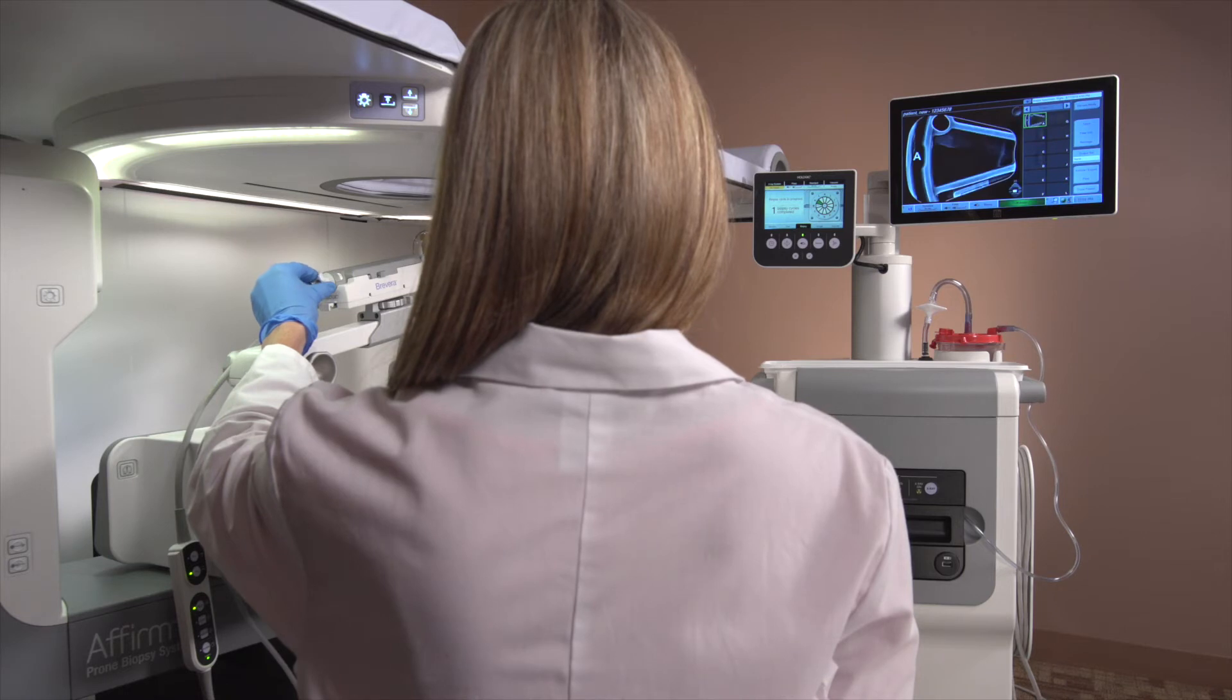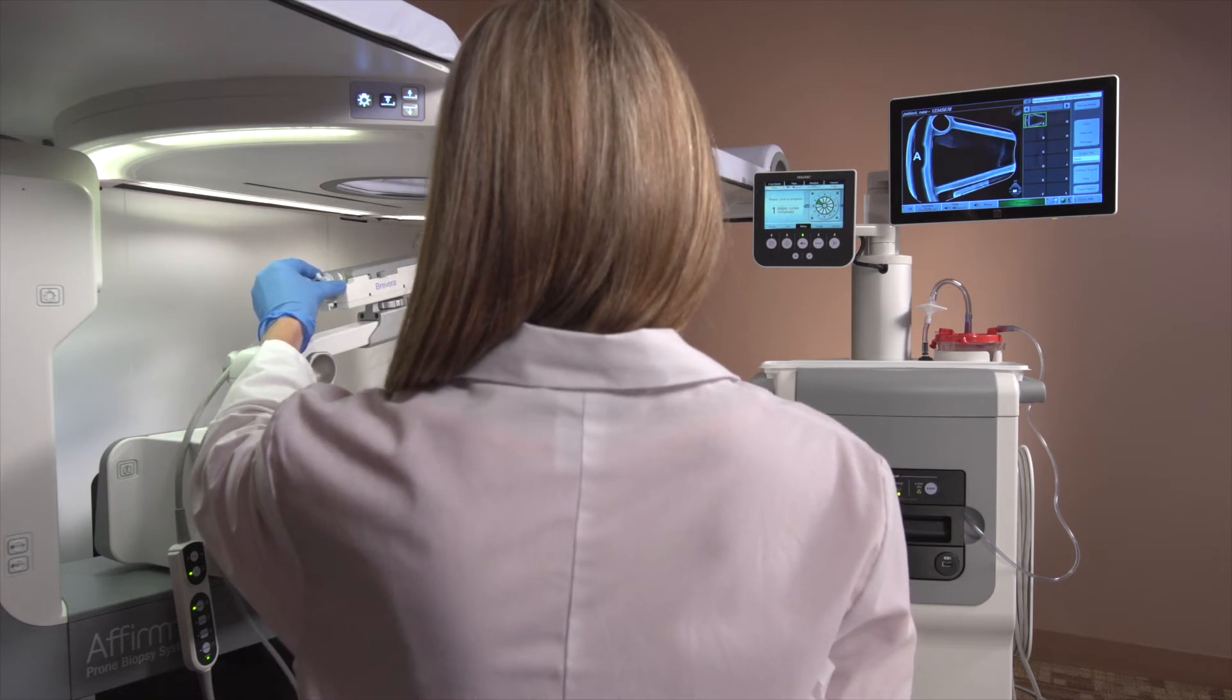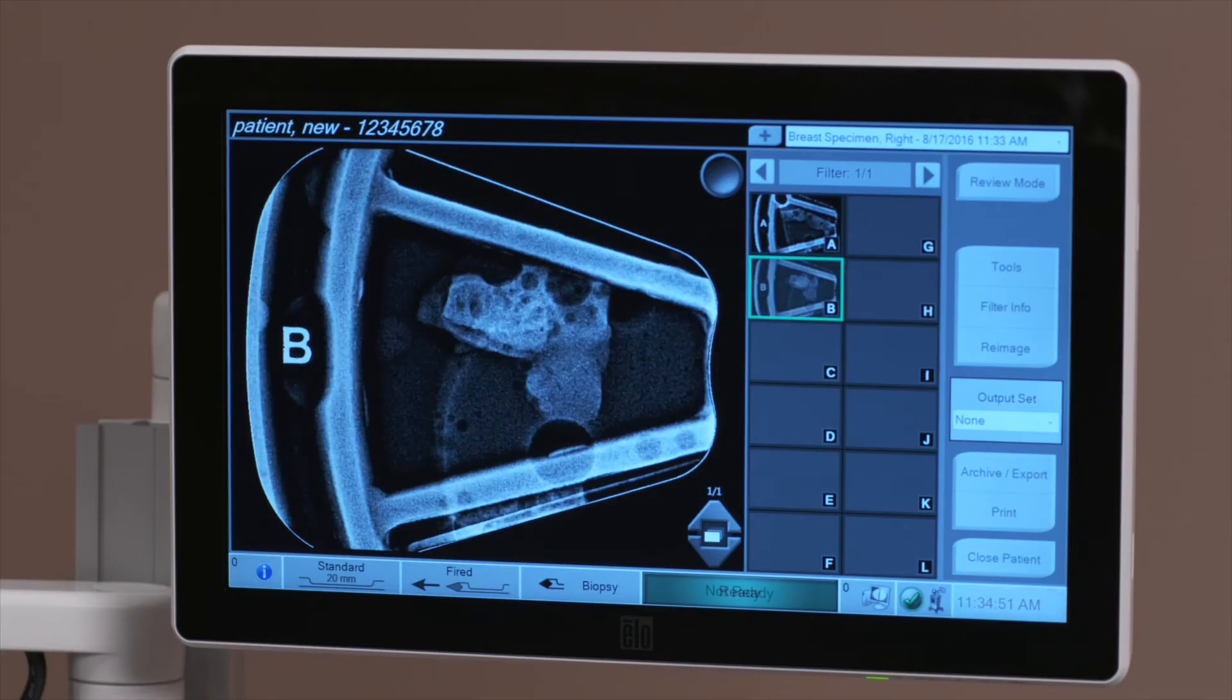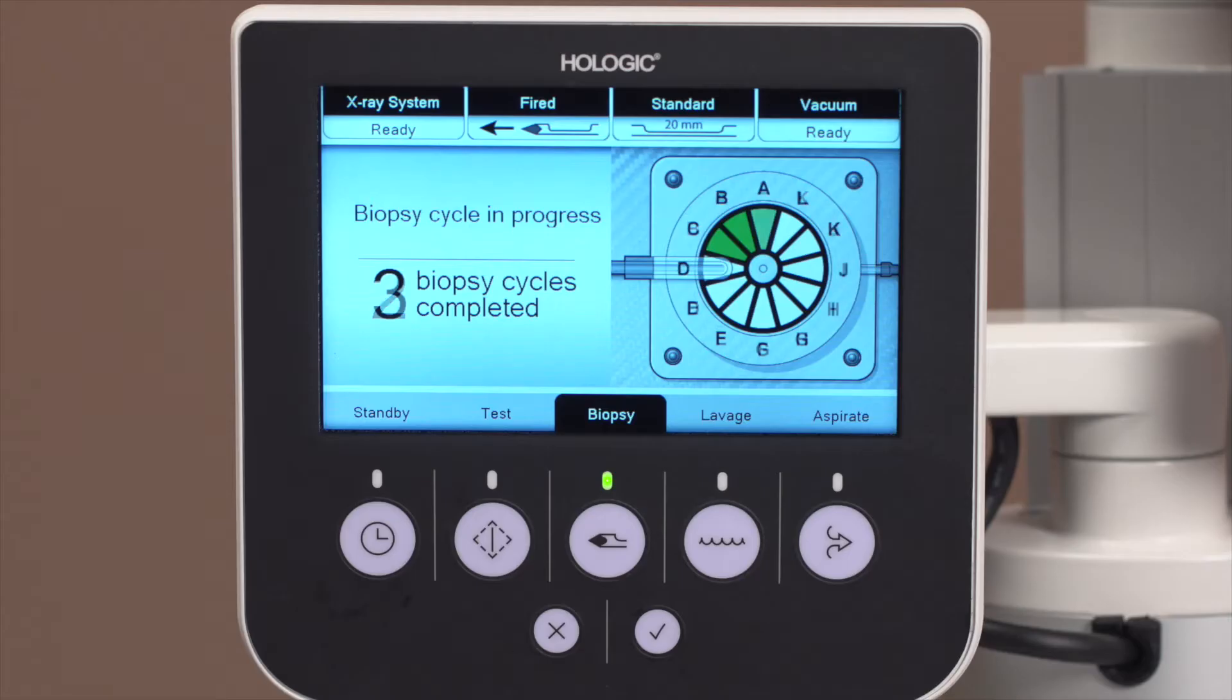The image of each sample will update on the imaging display as each X-ray is processed. Each image will contain the corresponding letter designation labeled A through L for each tissue filter chamber imaged. The technologist display will state how many biopsy cycles have been completed and will depict an image of the filter wheel indicating which chambers have been filled with a specimen highlighted in green.